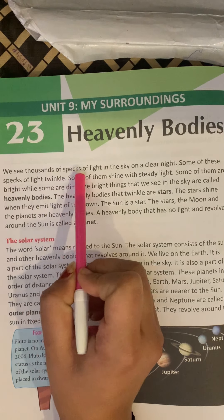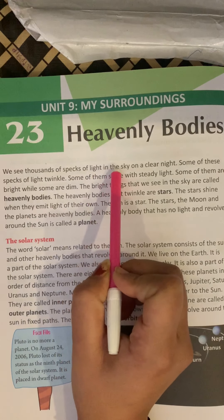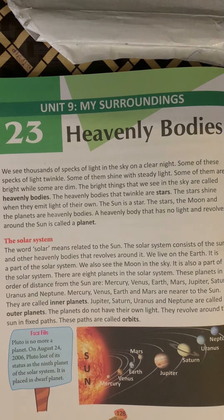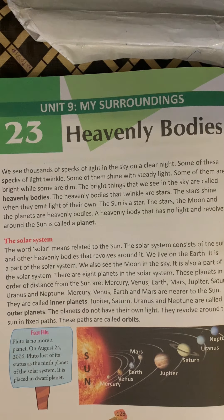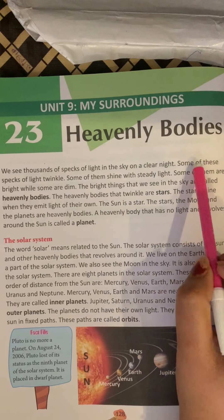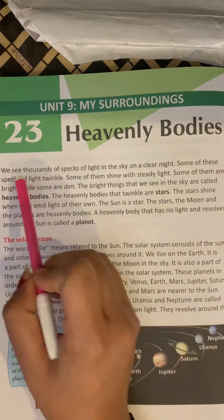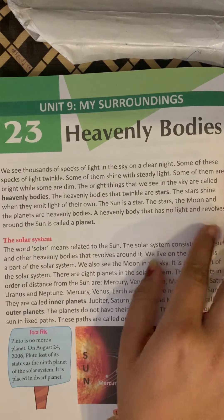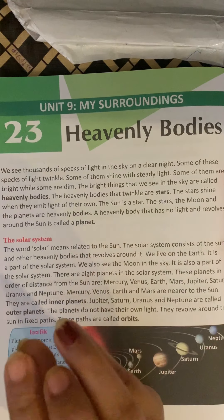We see thousands of specks of light in the sky on a clear night. When you look at the sky at night, you can see how many lights, what kind of lights you can see. Some of these specks of light twinkle. Some of the stars you can see twinkle.